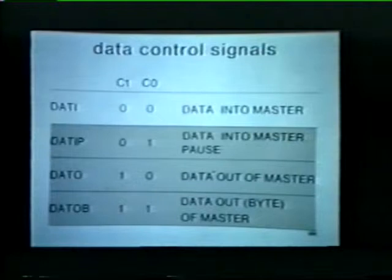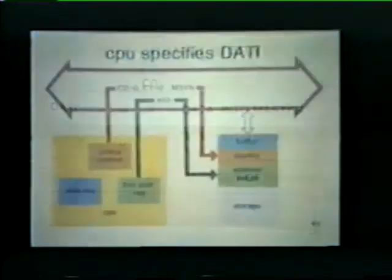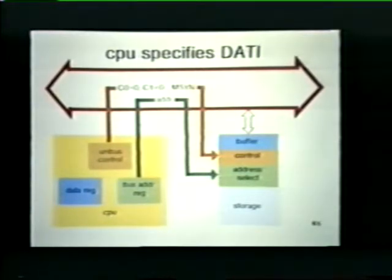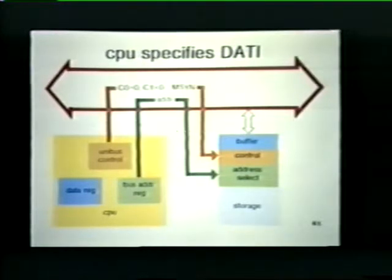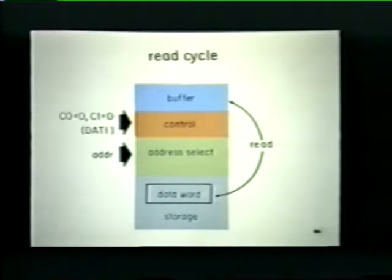For example, if a master device wishes to retrieve data from memory, it specifies a data I transfer. Here's an example of a typical data I transfer. The CPU initiates the transfer by clearing the C0 and C1 lines and by asserting its master sync signal. The CPU also places a memory address on the unibus. The memory unit recognizes this as its address and responds to the data I transfer as follows: first, the memory unit selects the storage location containing the data word addressed by the processor.